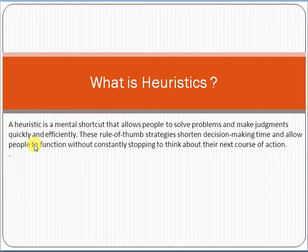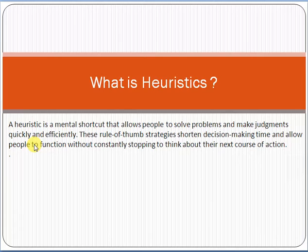Heuristics is basically what you can call a rule of thumb. This topic is important in terms of decision making — how we can make decisions using this approach. Most people, 99%, are taking actions or making decisions based on a heuristics approach but they don't know that this technique is called heuristics. We will see this topic in detail in a simple way so that you can understand it easily.